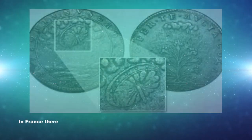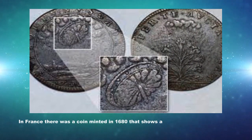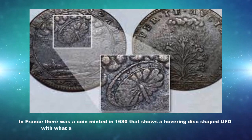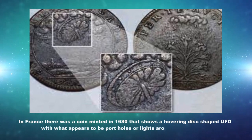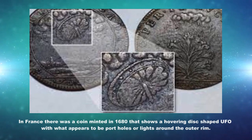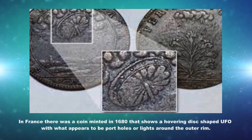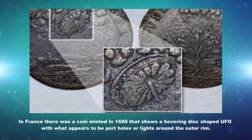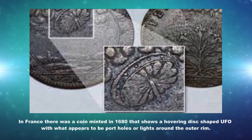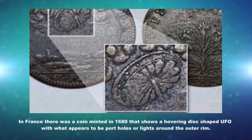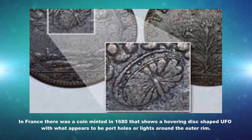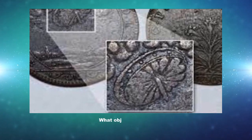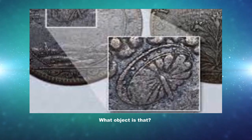French Coin: in France there was a coin minted in 1680 that shows a hovering disc-shaped UFO with what appears to be portholes or lights around the outer rim. What object is that?